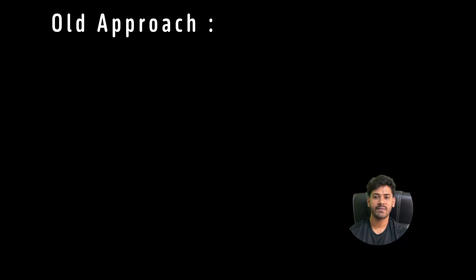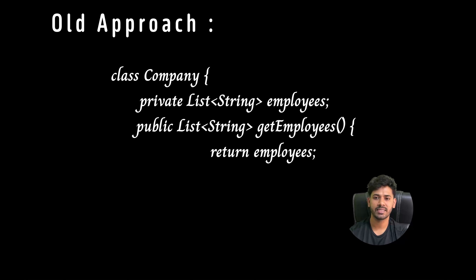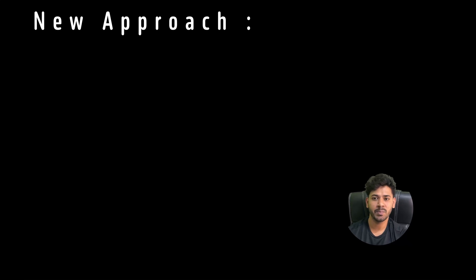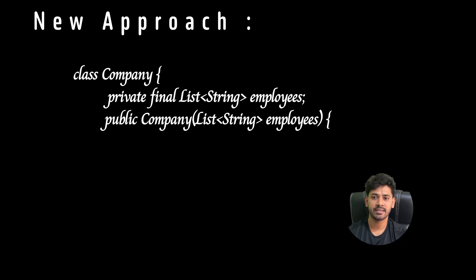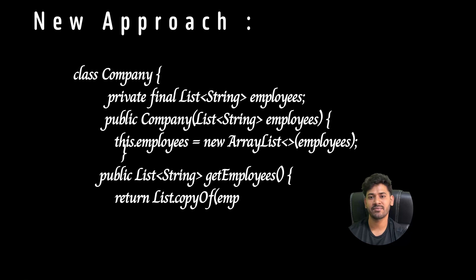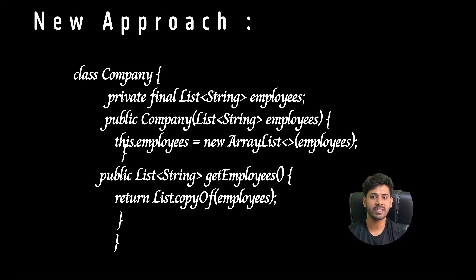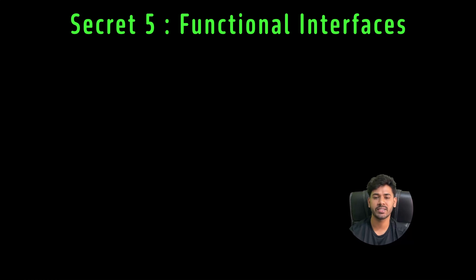Old approach: suppose you have a class Company with a list of employees — returning the list directly allows callers to modify it, changing your internal state. New approach: use a private final list of employees, make a defensive copy in the constructor, and return a copy in the getter. Real-time examples include bank transactions, audit logs, and settings objects.